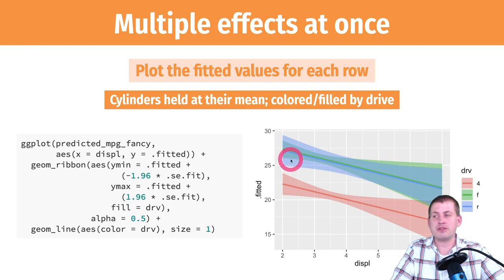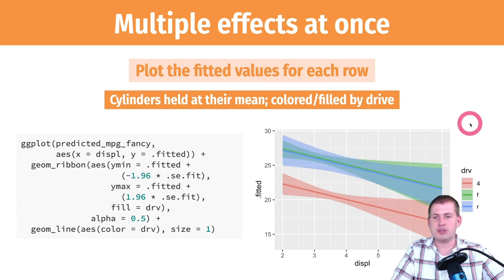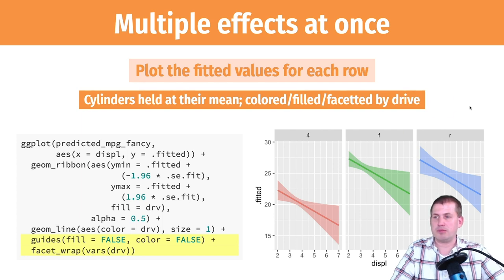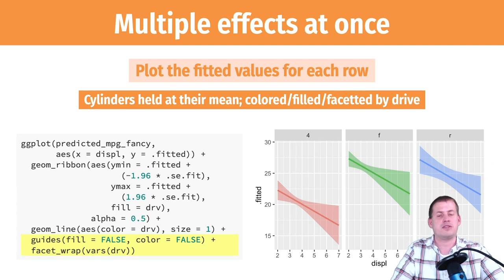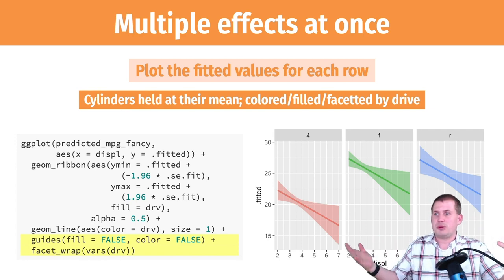There's some overplotting when coloring, so what we can do is facet instead. Now we have three different subplots for each drive type, showing how displacement affects miles per gallon across all three. This shows the effects of our regression using multiple sliders and switches in a single plot — which is super powerful. Once you get the hang of creating a new dataset with what you want to hold constant and what you want to manipulate, plugging it into the model, and showing fitted values, it becomes straightforward.